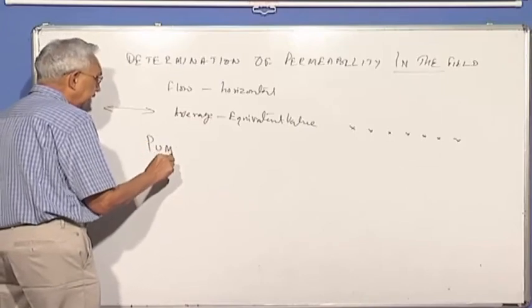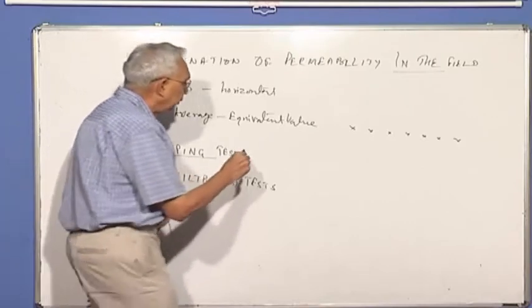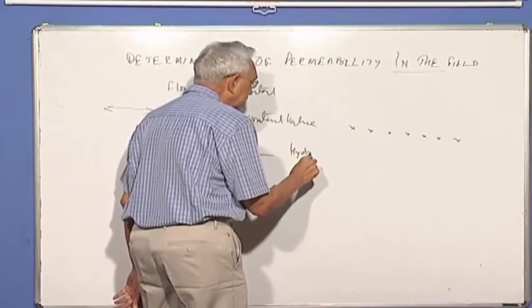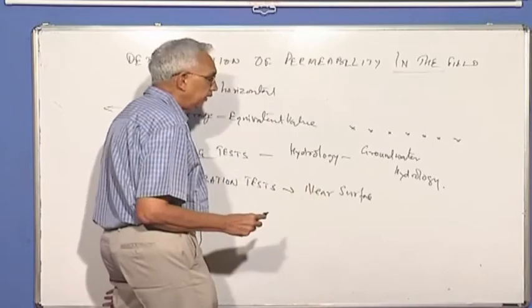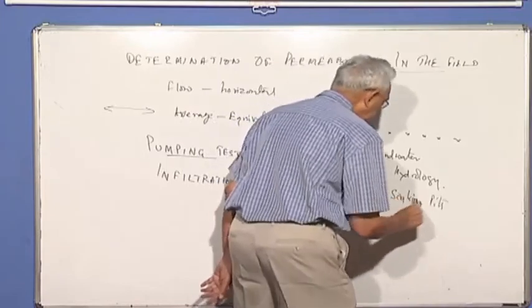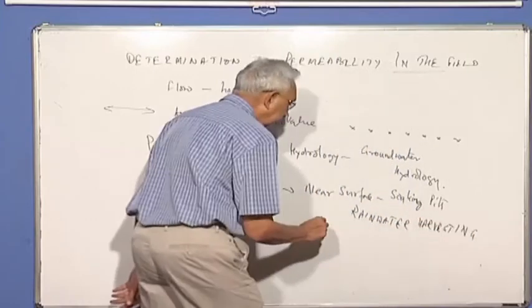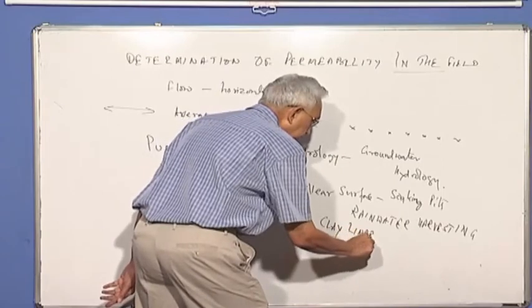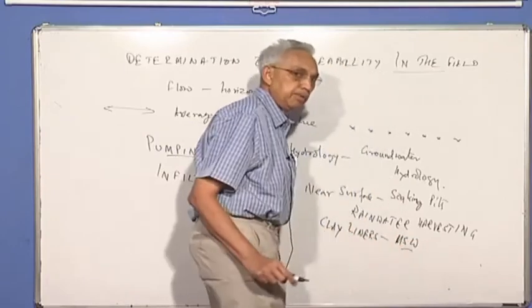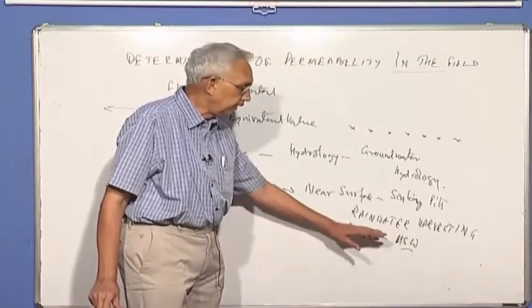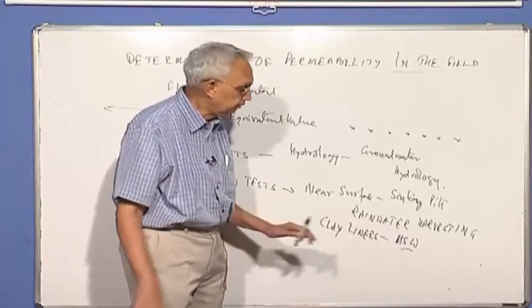And what are the two approaches we have? What they call as pumping tests. The second are called infiltration tests. Let's now look at pumping tests. You probably would study the same in hydrology, particularly groundwater hydrology, whereas this one is more near surface. We are now doing this for soaking pits, rainwater harvesting. You can find out how much is the rate of flow inside. And lastly, what we call as clay liners, which are being used for municipal solid waste disposal sites, MSW, where we use clays and we would like to determine the permeability of the soil layer, and this is fairly close to the ground level so we can do the test.